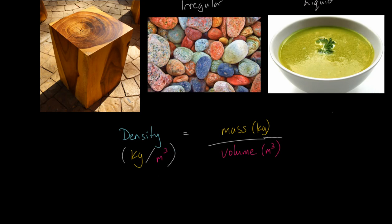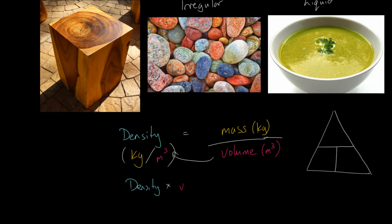Just out of interest, if we turn this into a triangle — three parts because we've got three values — if we rearrange, density times volume equals mass. That means mass goes on the top, because density and volume need to sit next to each other at the bottom of the triangle.